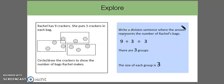Okay, so if we're writing a division sentence, we have 9 divided by 3 equals 3. There are 3 groups. The size of each group is 3.